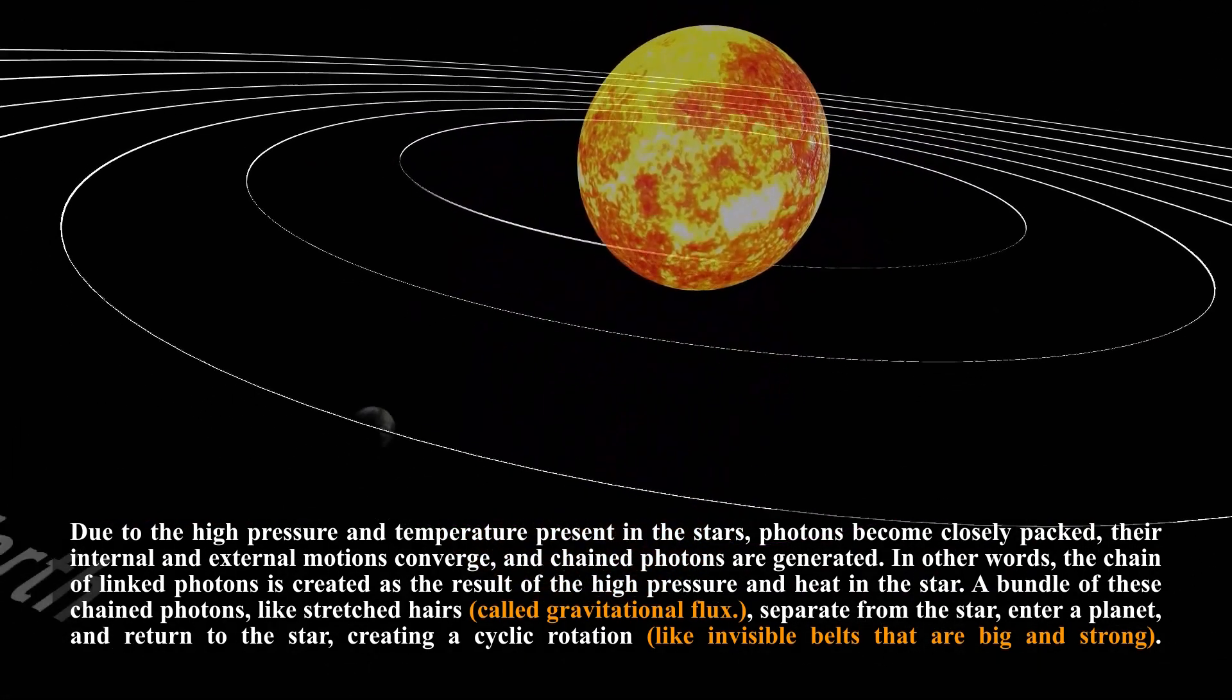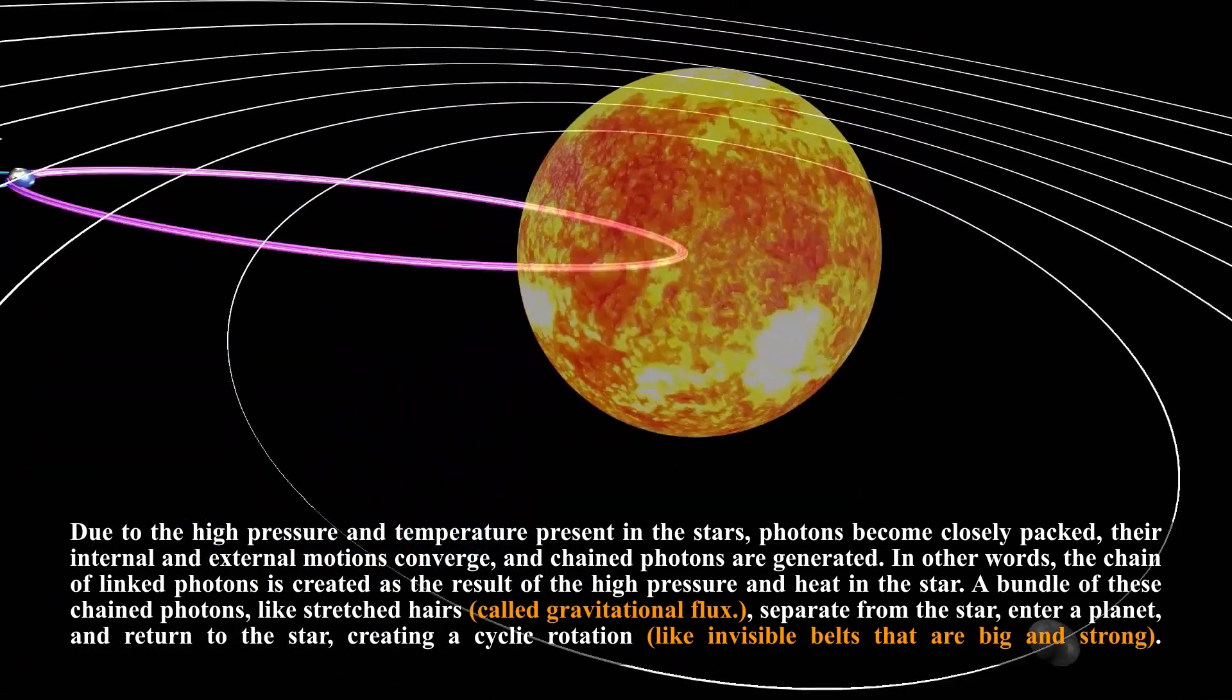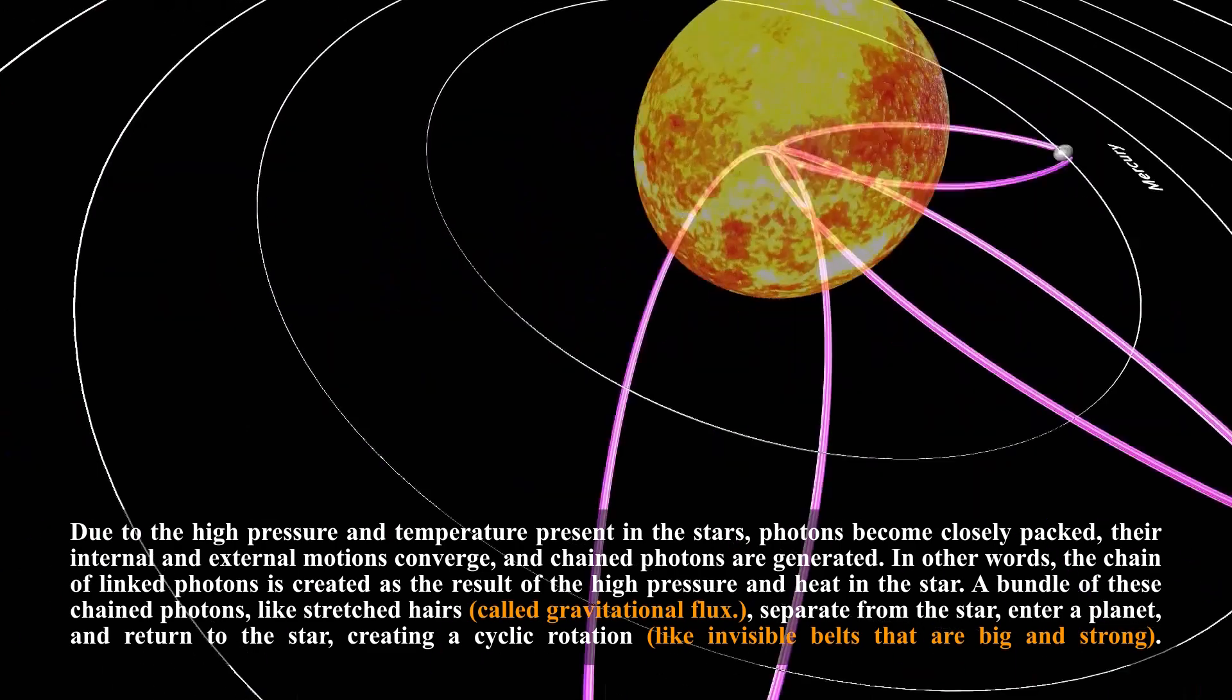A bundle of these chain photons, like straight hairs, called gravitational flux, separate from the stars, interplanet, and return to the stars.